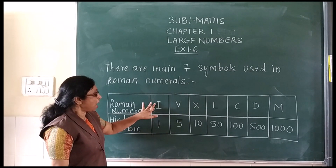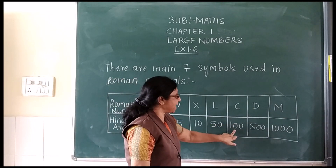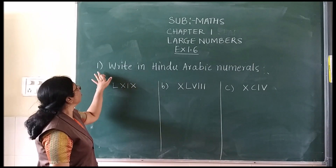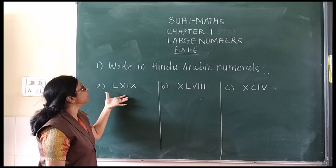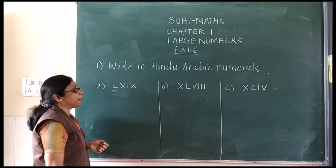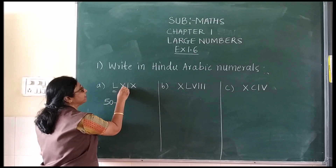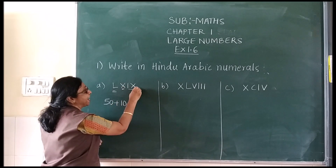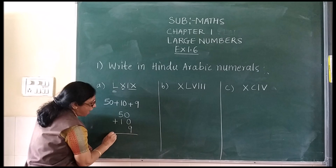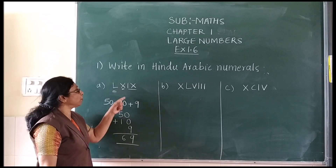Roman numerals in Hindu Arabic: I for 1, V for 5, X for 10, L for 50, C for 100, D for 500, M for 1000. Question number 1: write in Hindu Arabic. The first sum — L stands for 50, then X stands for 10, then IX stands for 9. So you add all these numbers: 50 plus 10 plus 9 = 69. This is the Hindu Arabic numeral for this Roman number.